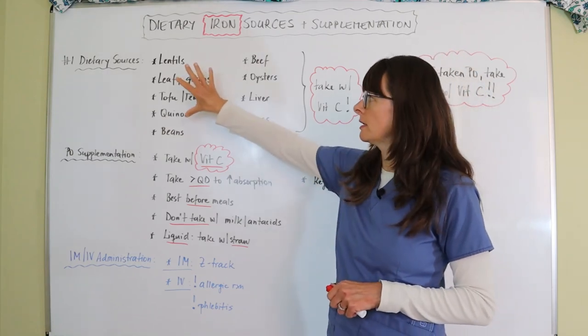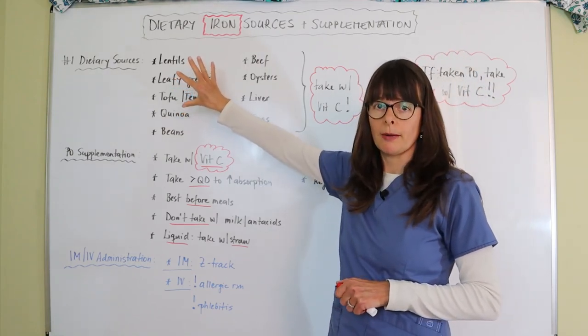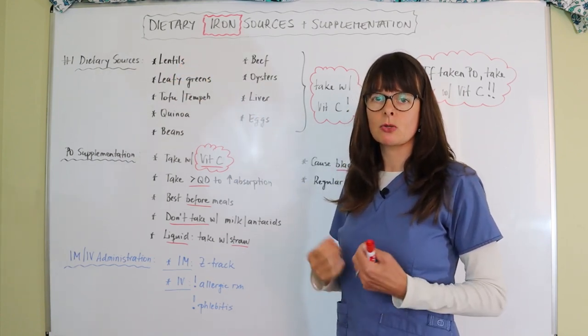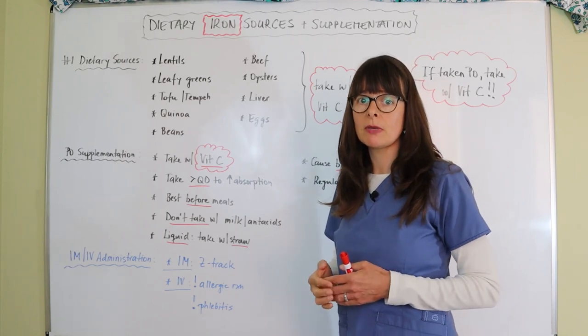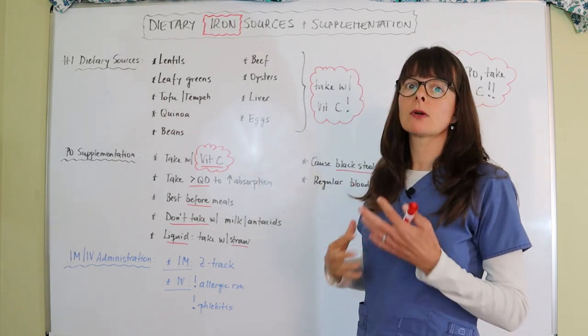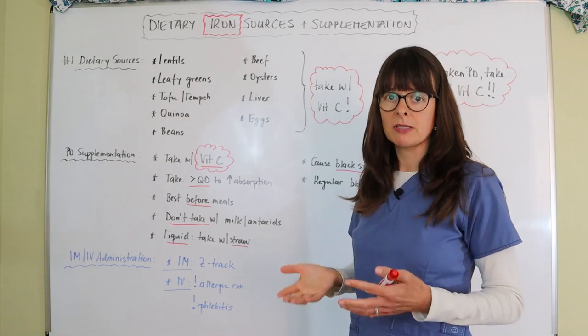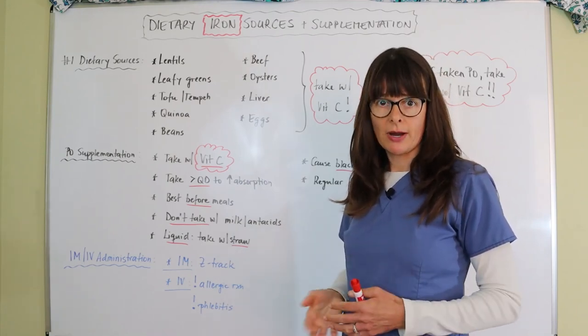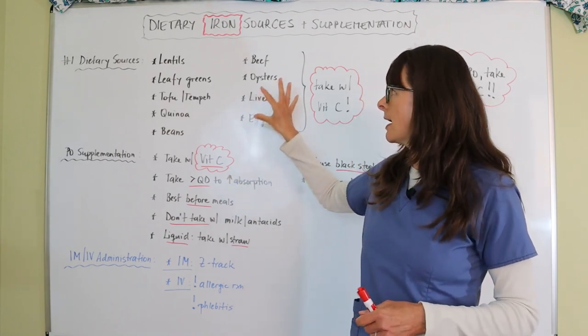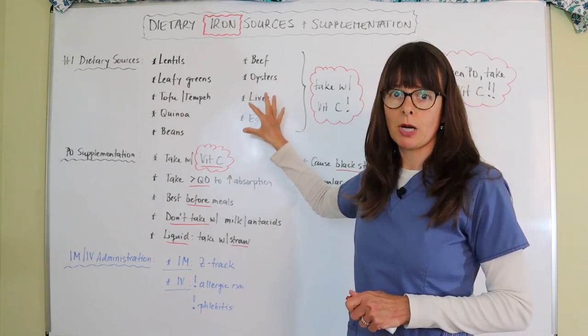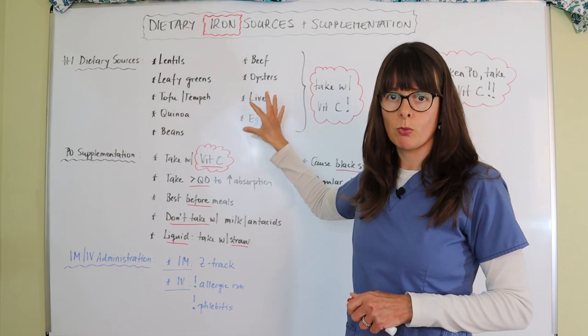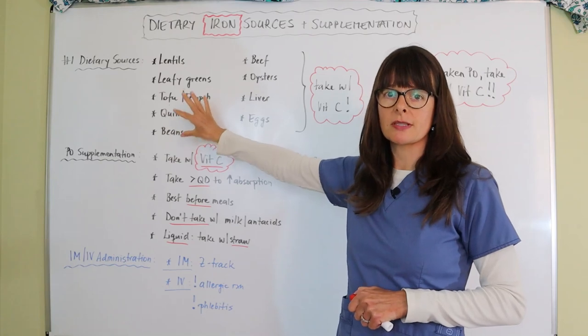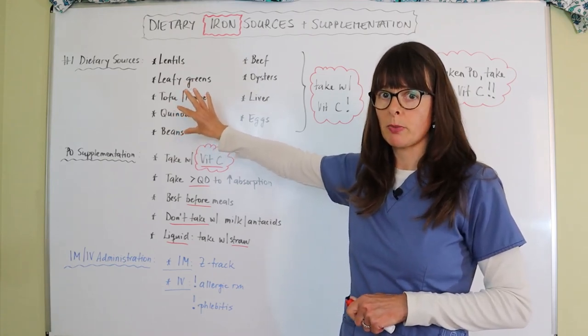The reason that I like to point the plant-based iron sources out is because many times patients who are at risk for iron deficiency anemia already have other medical problems, such as people on dialysis or chronic kidney disease that might also have atherosclerosis. We know that these animal-based products can cause problems with their cholesterol and lead to more atherosclerosis, whereas with the vegetable-based iron sources we don't really have that risk, so they're typically much better.